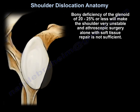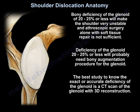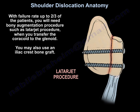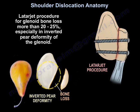Bony deficiency of the glenoid of 20 to 25% or more will make the shoulder very unstable, and arthroscopic surgery alone with soft tissue repair is not sufficient. Deficiency of the glenoid of 20 to 25% or more will probably need a bony augmentation procedure. The best study to assess accurate deficiency of the glenoid is a CT scan with 3D reconstruction. You need a bony augmentation procedure such as the Latarjet procedure, where you transfer the coracoid to the glenoid. You may also use an iliac crest bone graft. Latarjet is indicated for glenoid bone loss more than 20 to 25%, especially in inverted pear deformity of the glenoid.